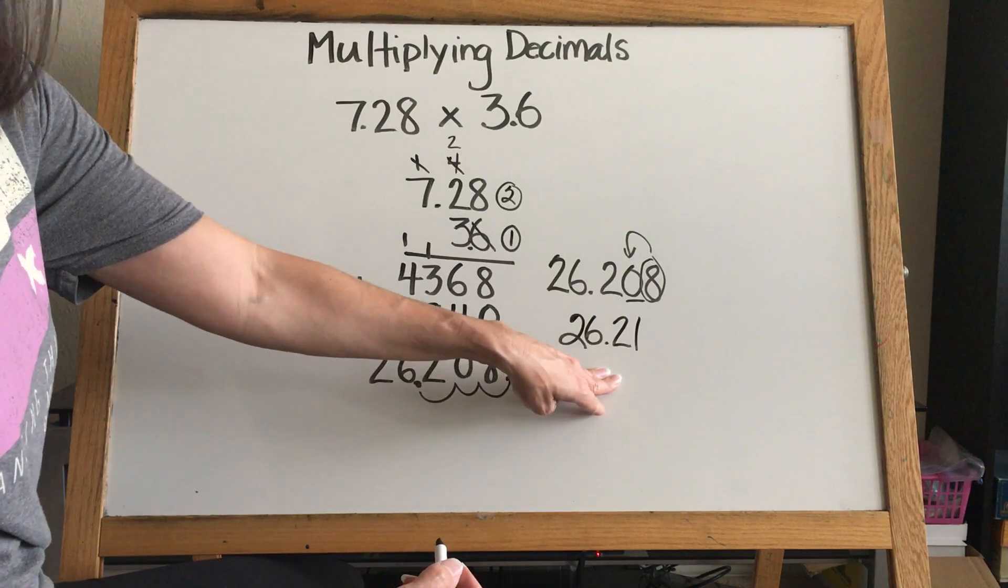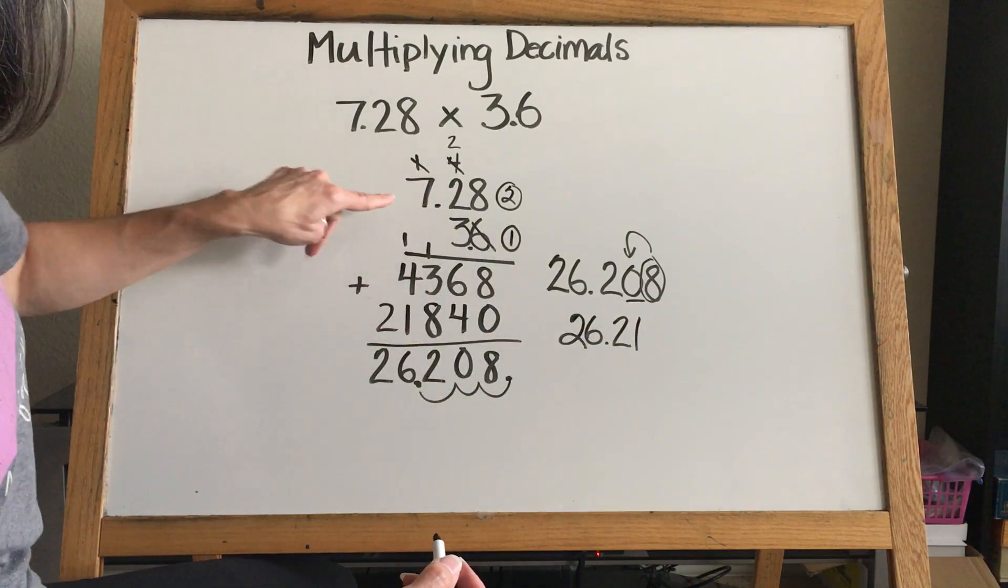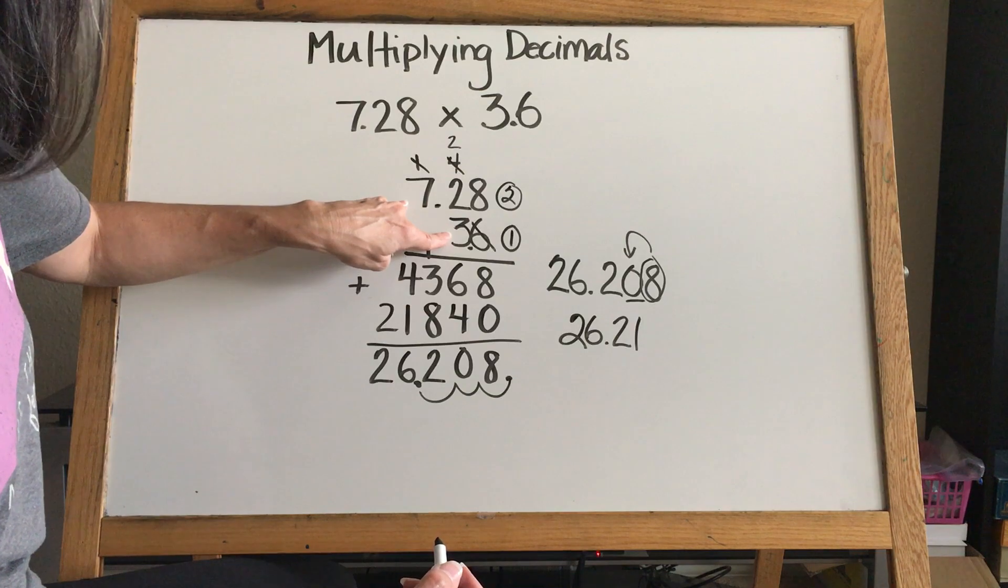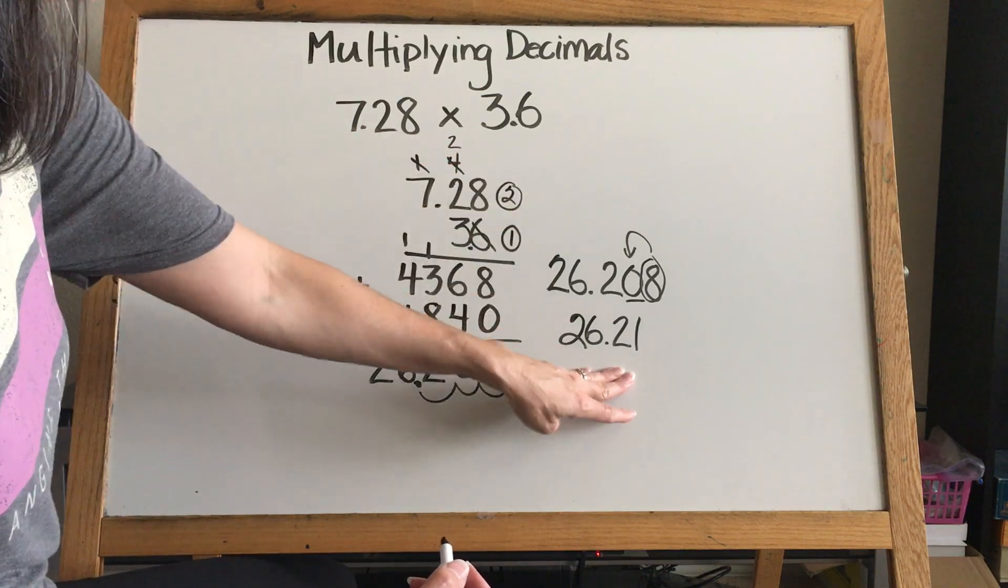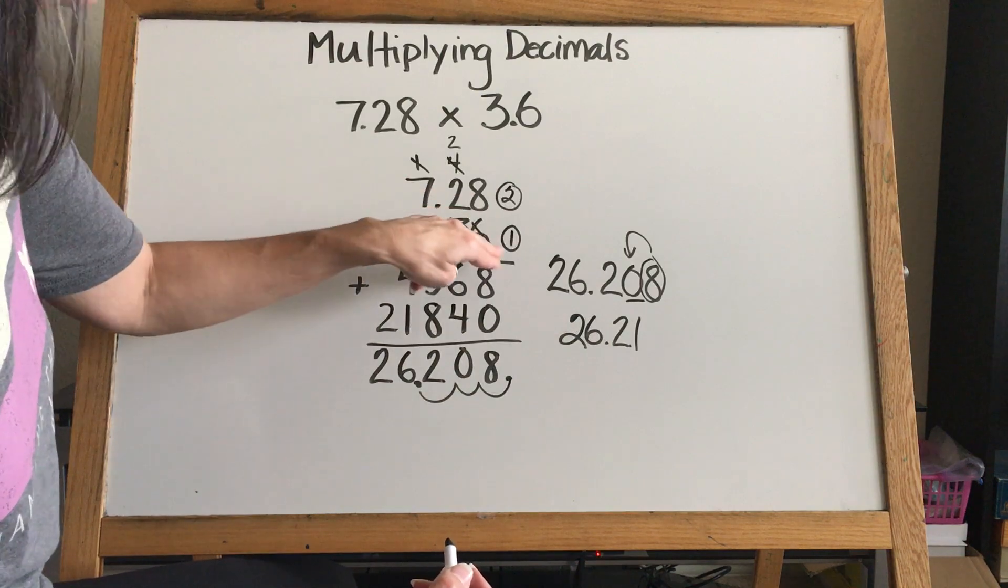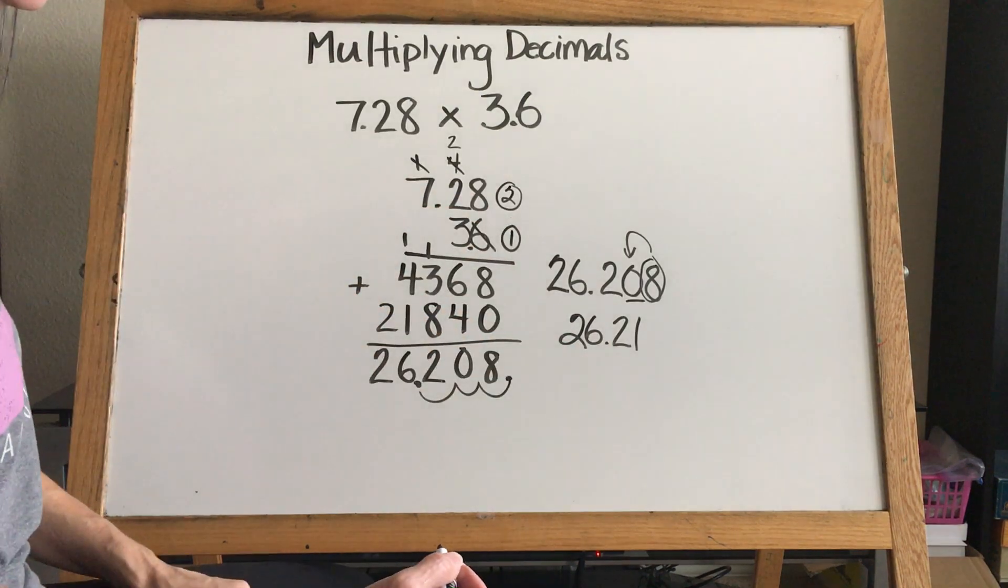Well, is that reasonable? We know it is because seven times three was 21, and we know it's going to be a little bit more than 21 because we've got some change here and some change here that we're multiplying together. So that's a reasonable answer.